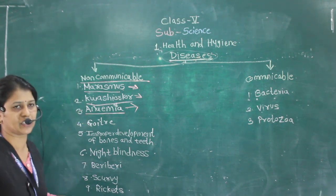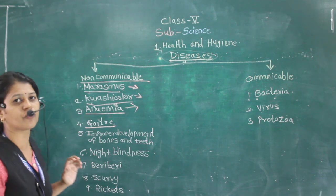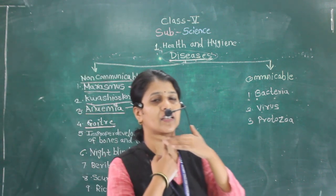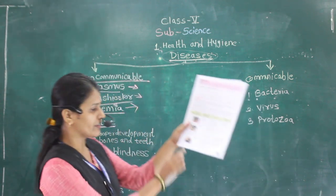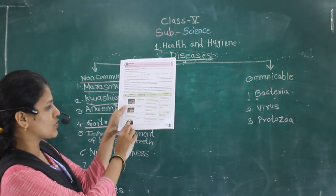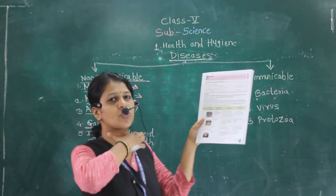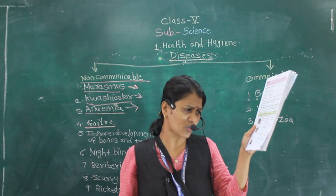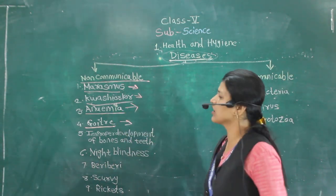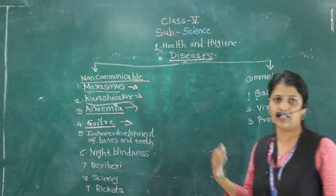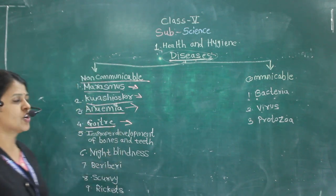Next is goiter, caused due to the lack of iodine. It comes near the thyroid gland — you can see swelling of the thyroid gland present near the neck region. For treatment, the person should be given iodized salt and seafood which is rich in iodine.